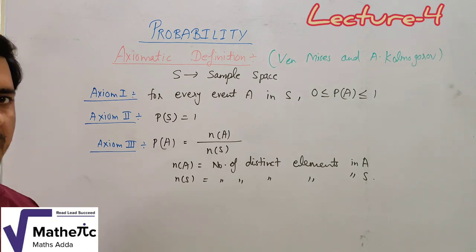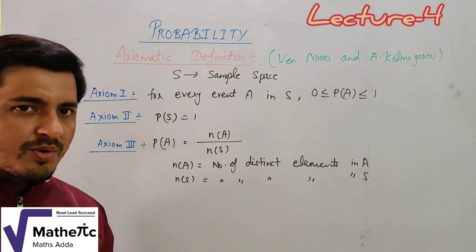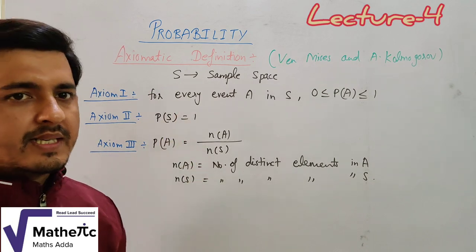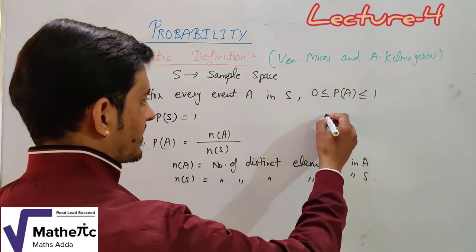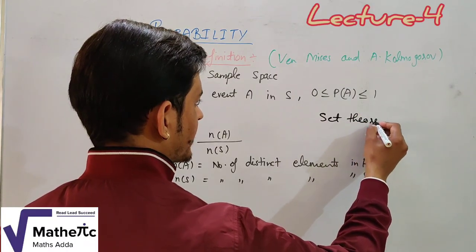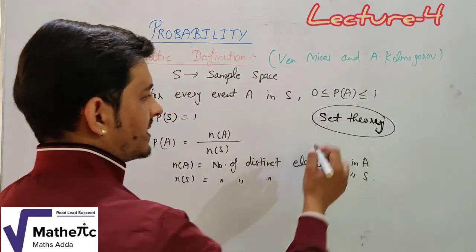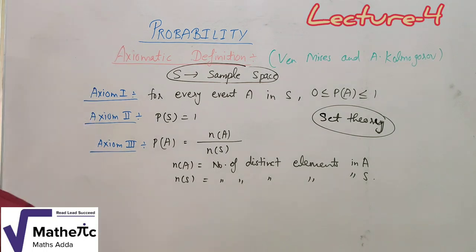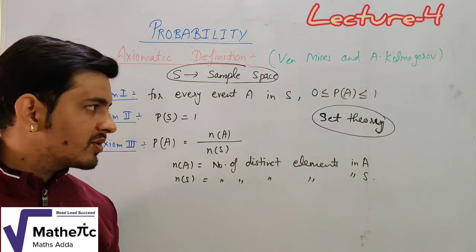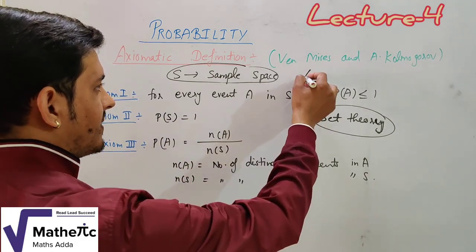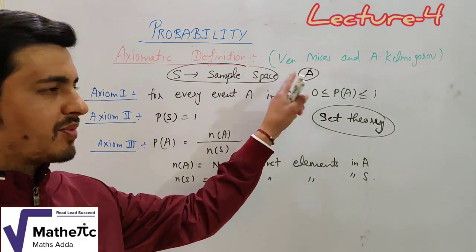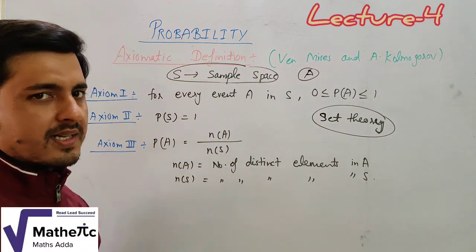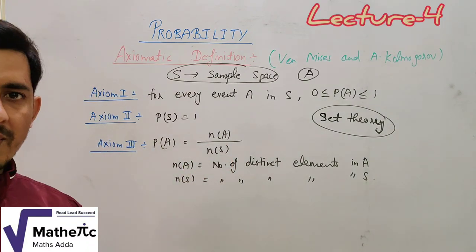Now let us look at the last approach: the axiomatic approach. This approach is a combination of both previous approaches and is based on set theory. In the axiomatic approach, given any experiment or event, we first form the sample space S, then form the set A corresponding to the event, count the number of elements, and from that find the probability of A.